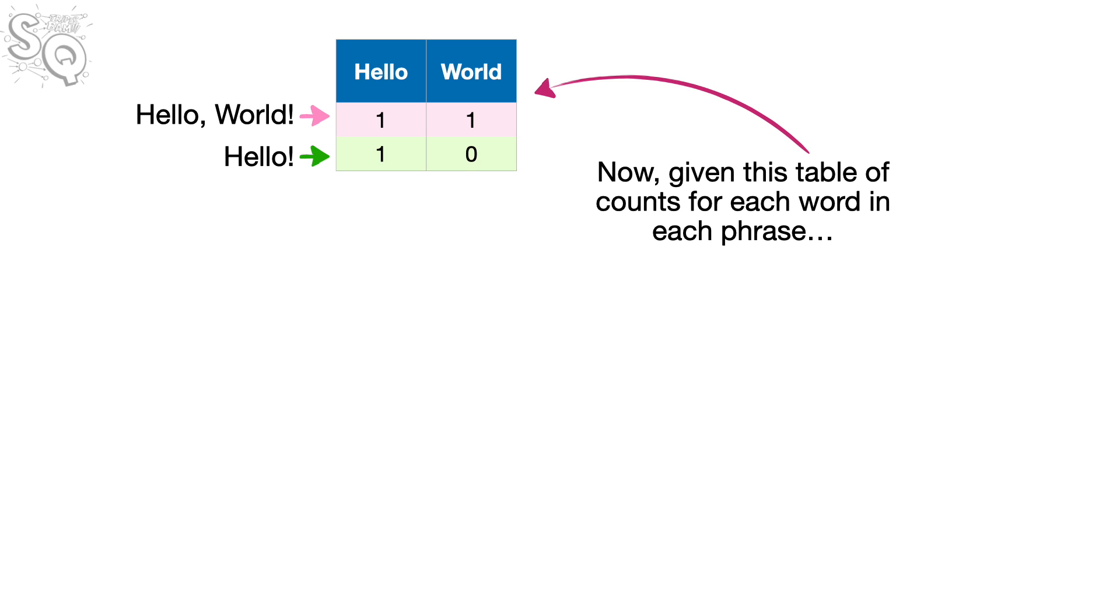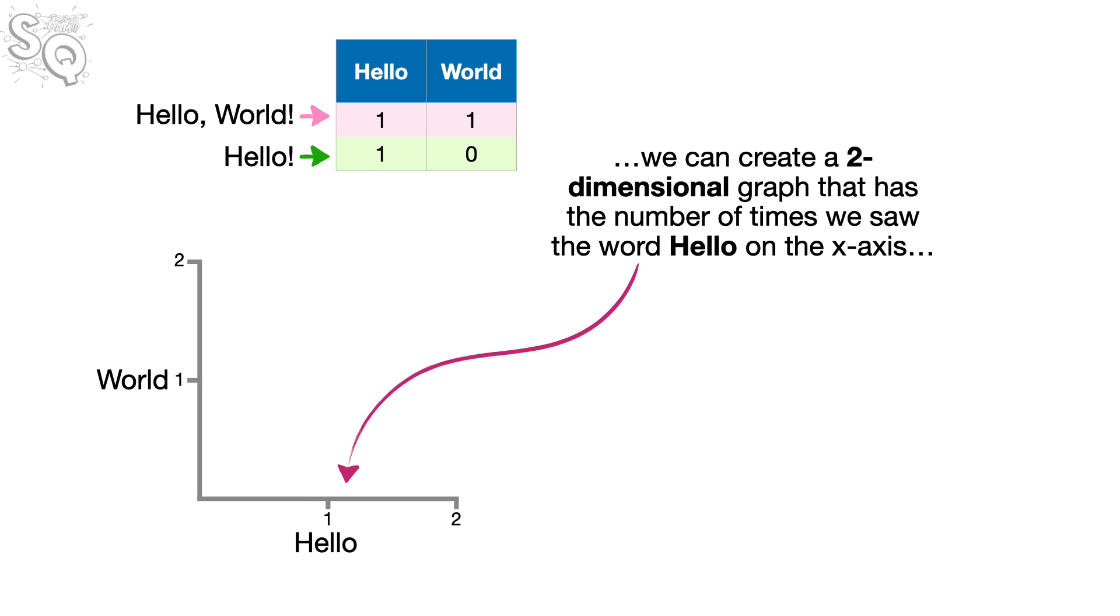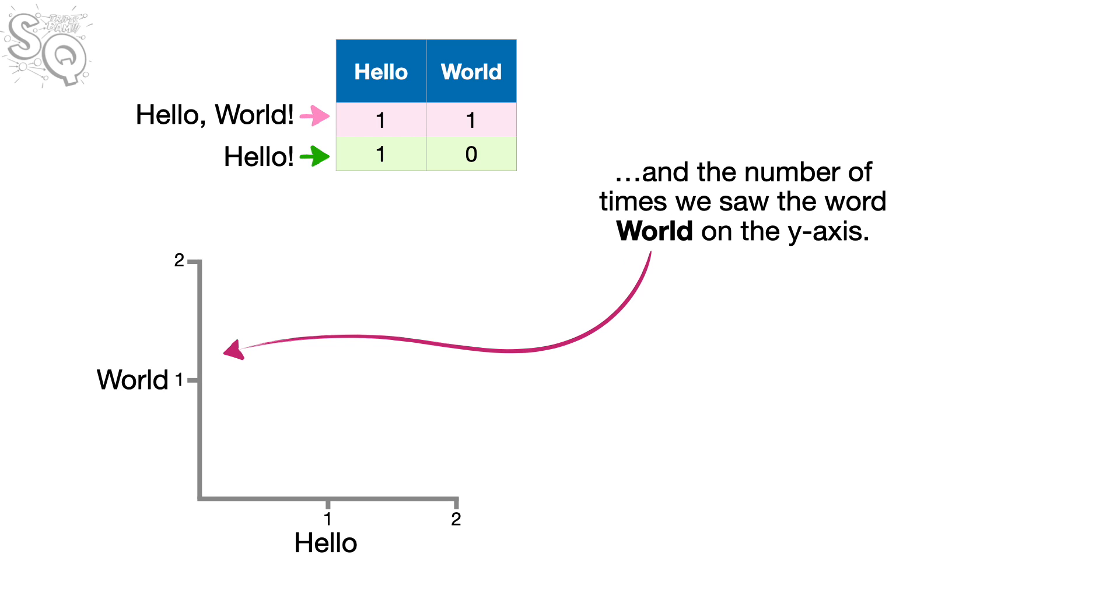Now, given this table of counts for each word and each phrase, we can create a two-dimensional graph that has the number of times we saw the word Hello on the x-axis, and the number of times we saw the word World on the y-axis.